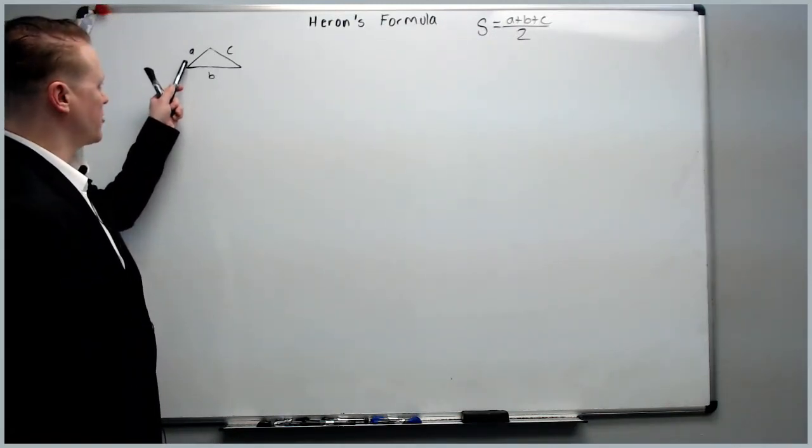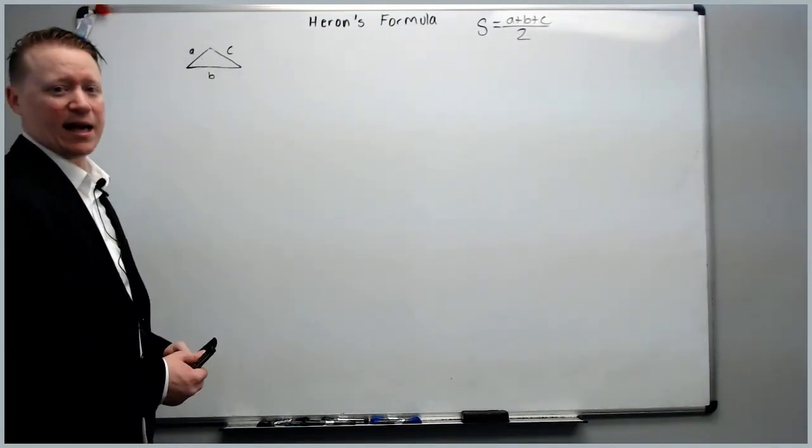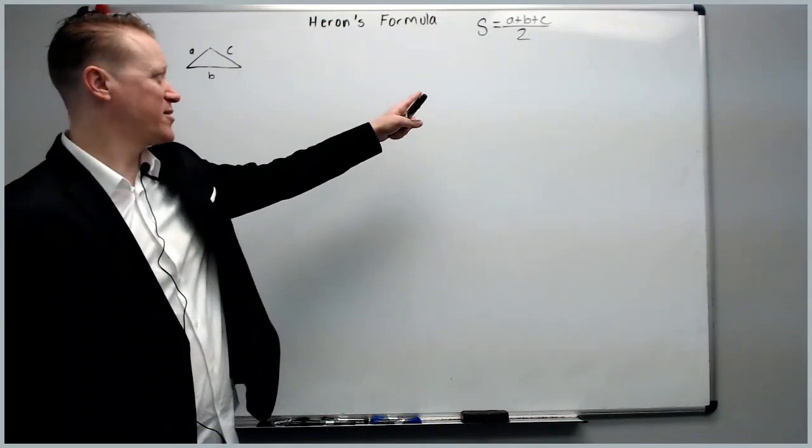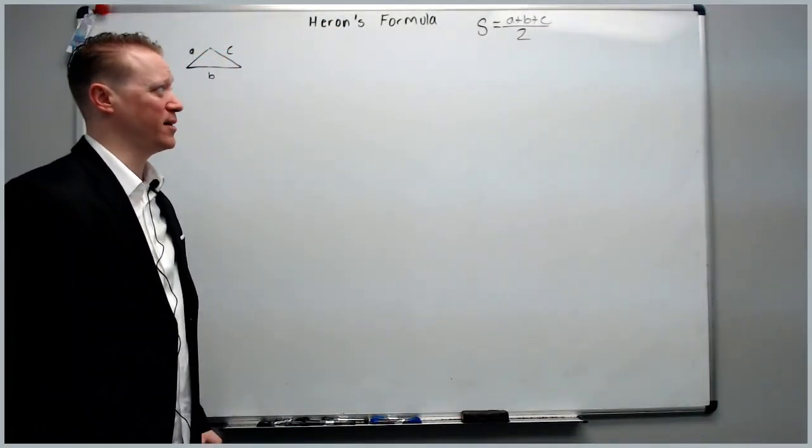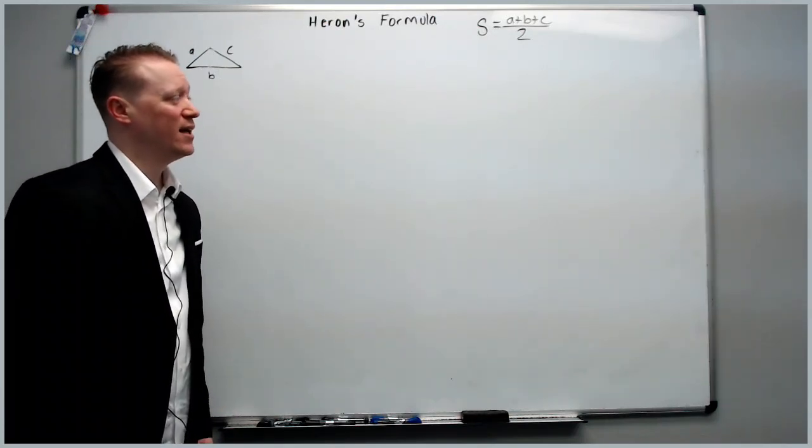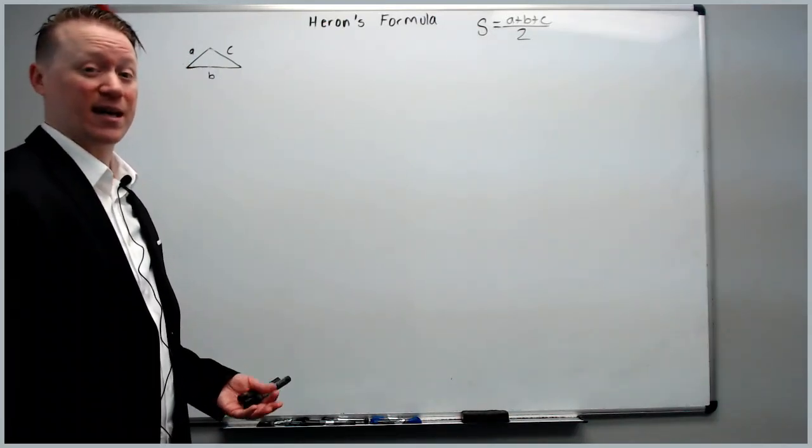So we have a triangle with three sides, namely A, B, and C, and we have something called the semi-perimeter, which is S, which is A plus B plus C over two. After the proof, we'll do a few examples as well.